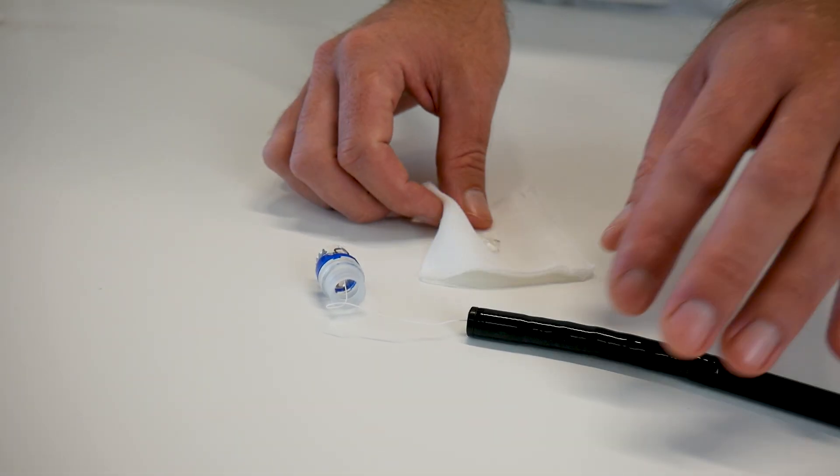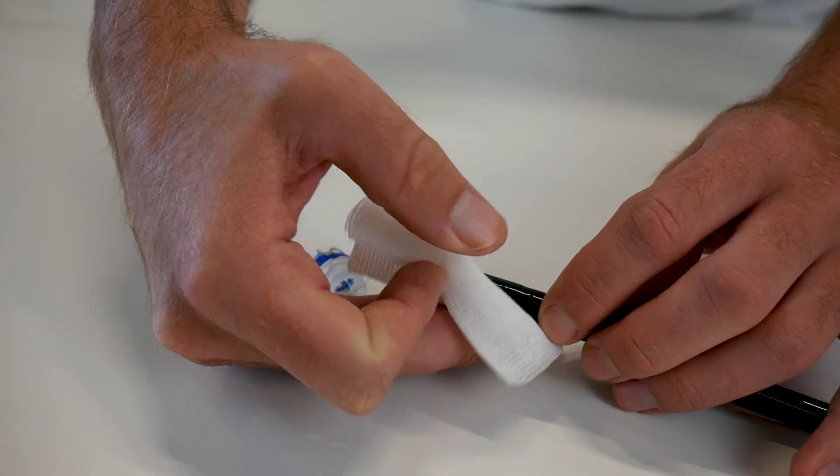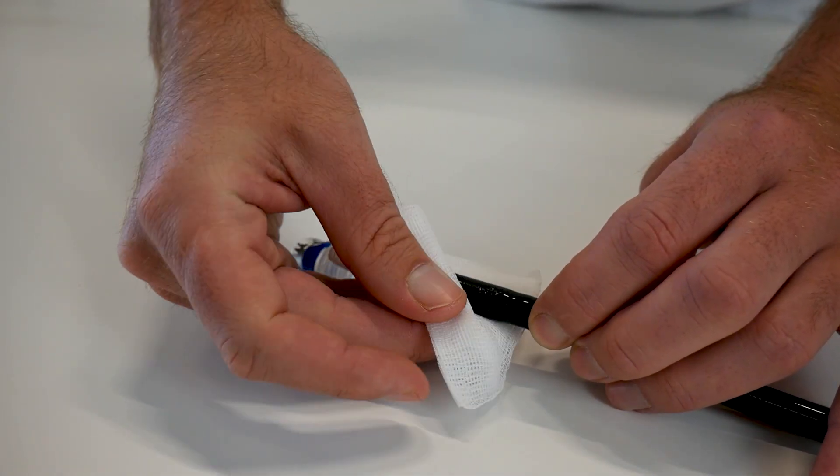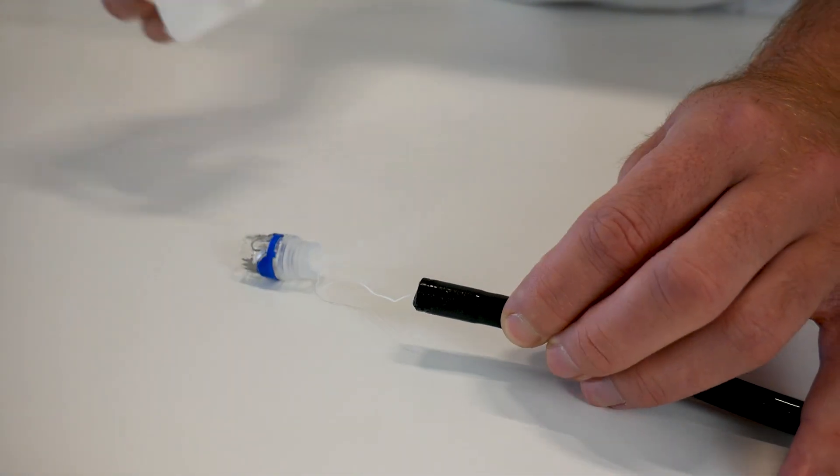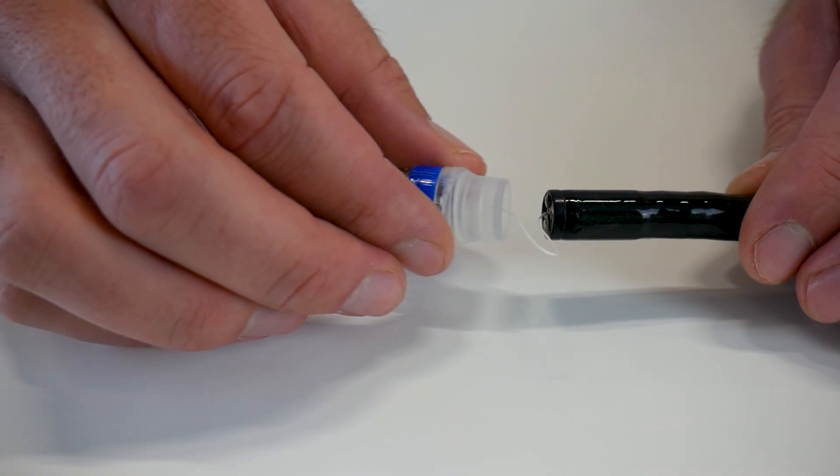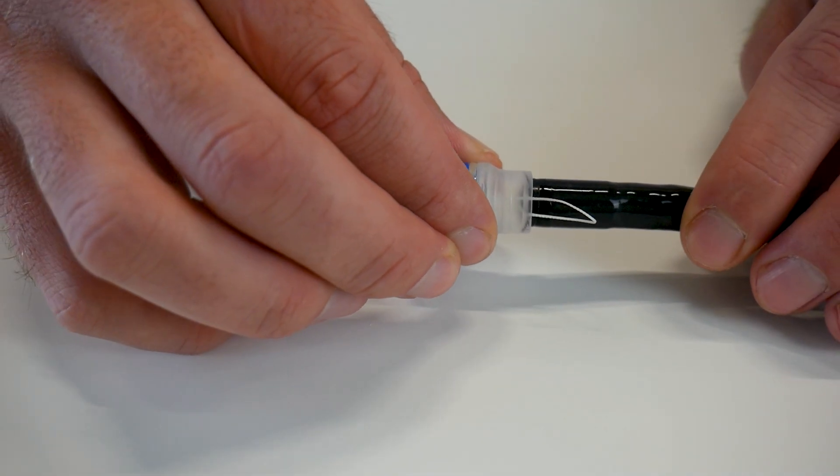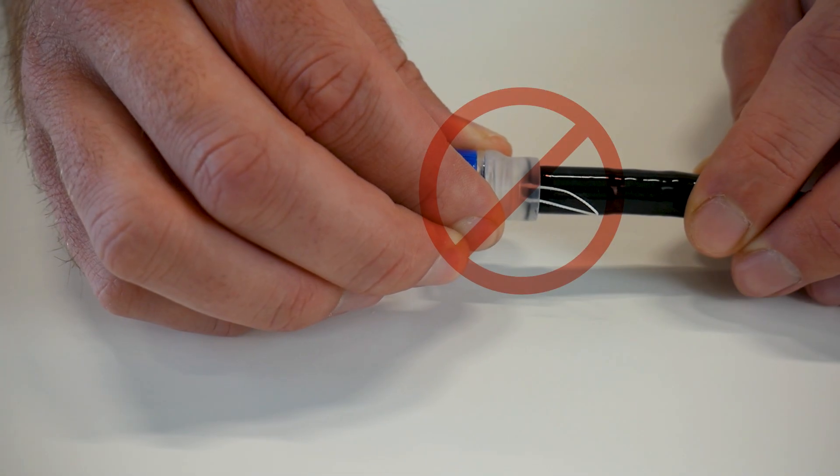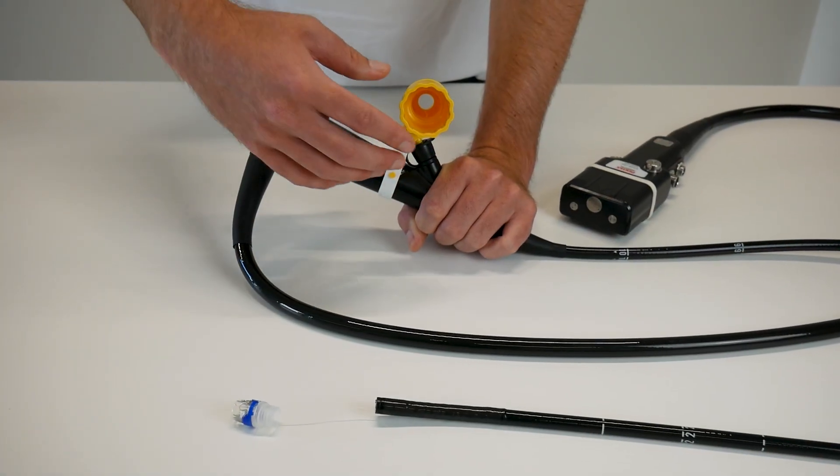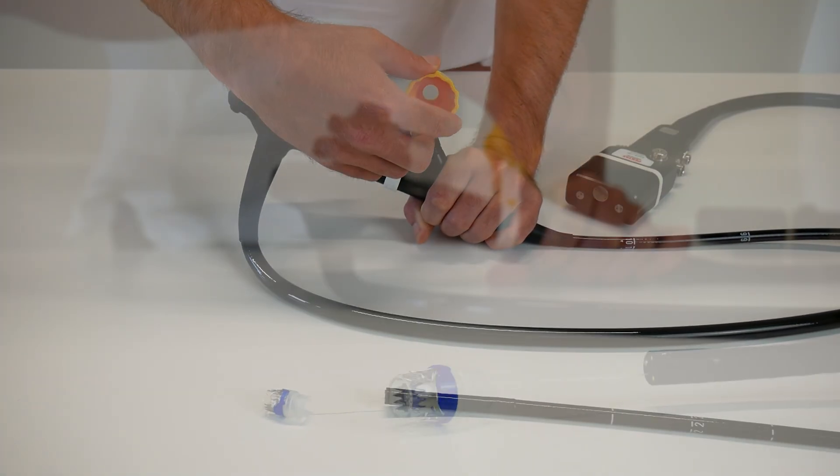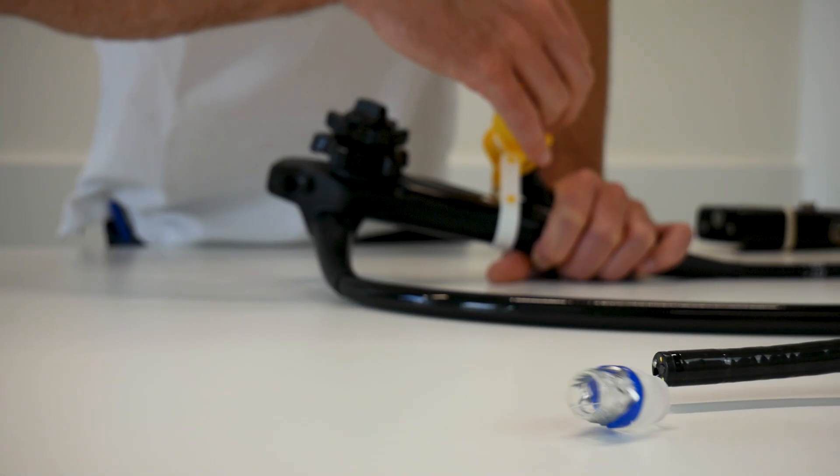Moisten the tip of the endoscope with water or endoscopic lubricant to facilitate assembling. Wind up the thread before placing the cap until the application cap touches the endoscope tip.